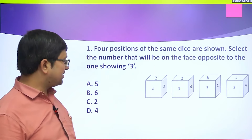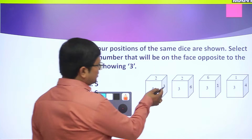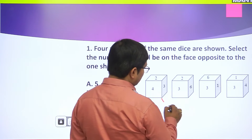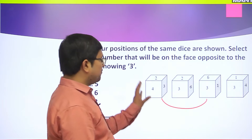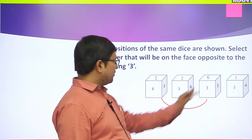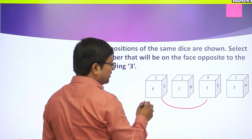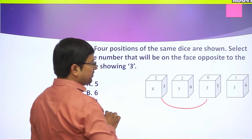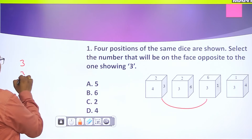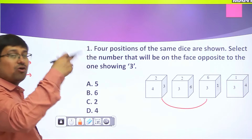Now look carefully - in figure 1 you have 3, 2, 4 and in figure 3 you have 3, 6, 1. If you look at both of these, you have only one face common and that is 3. So we have to start from the common face, which is 3, and then start moving in the clockwise direction in both of them.